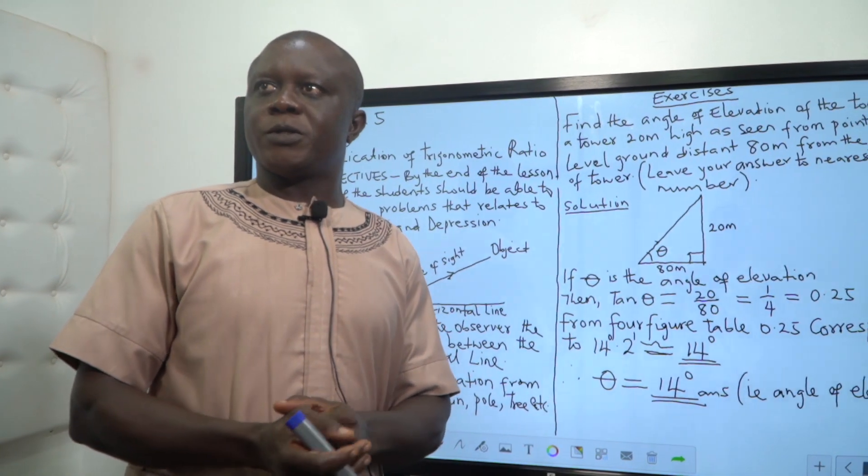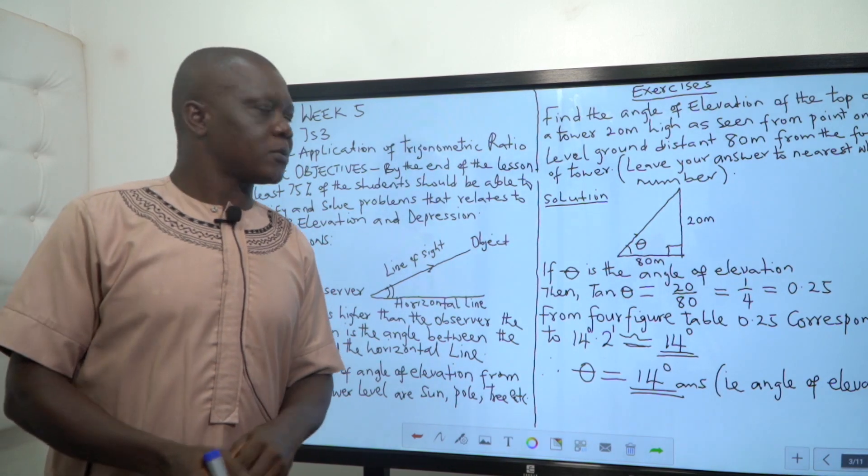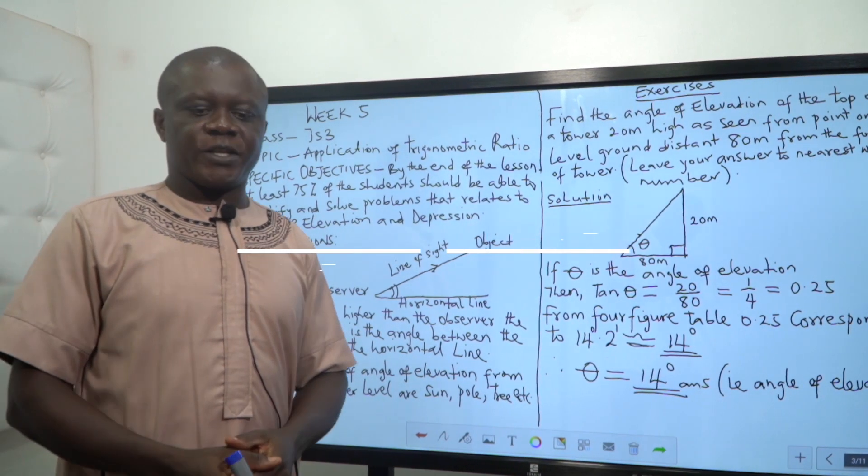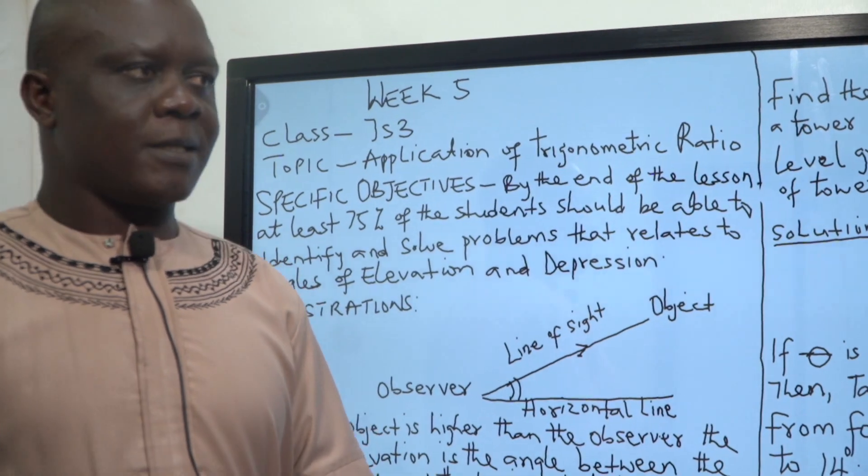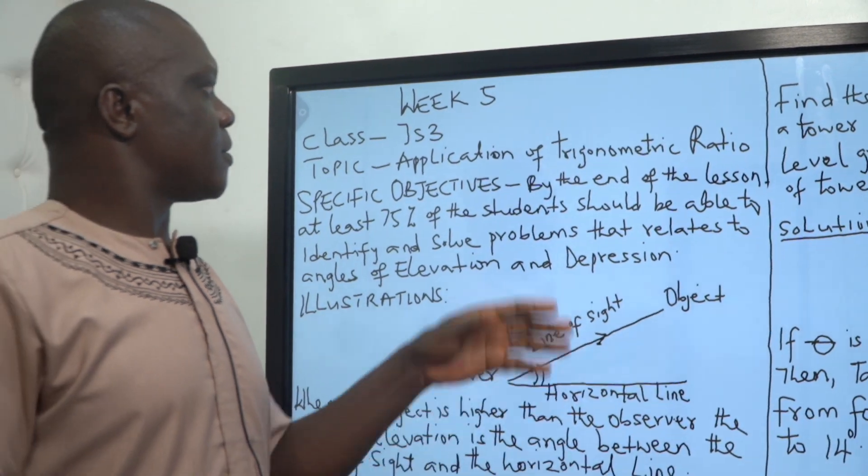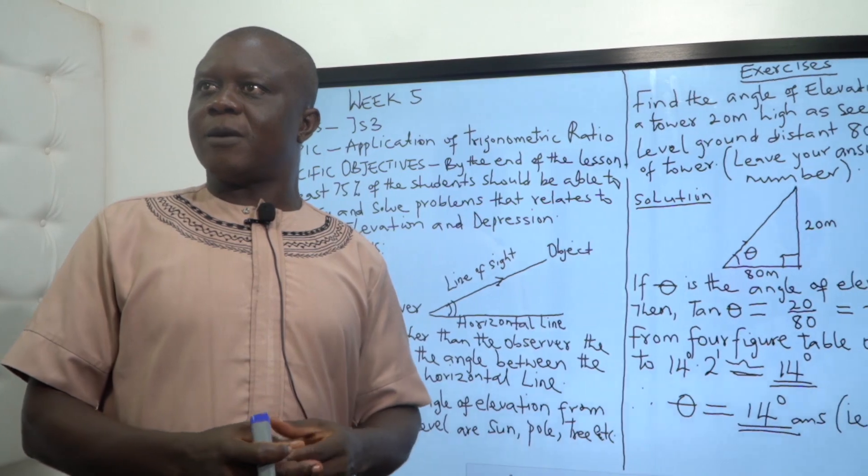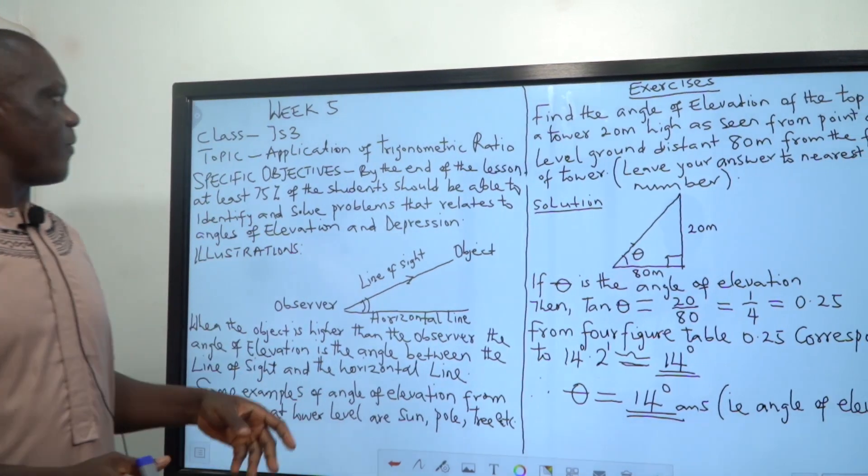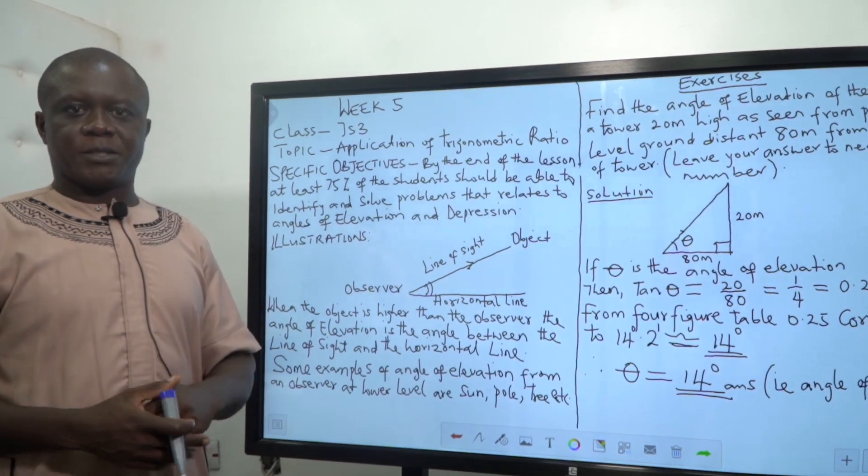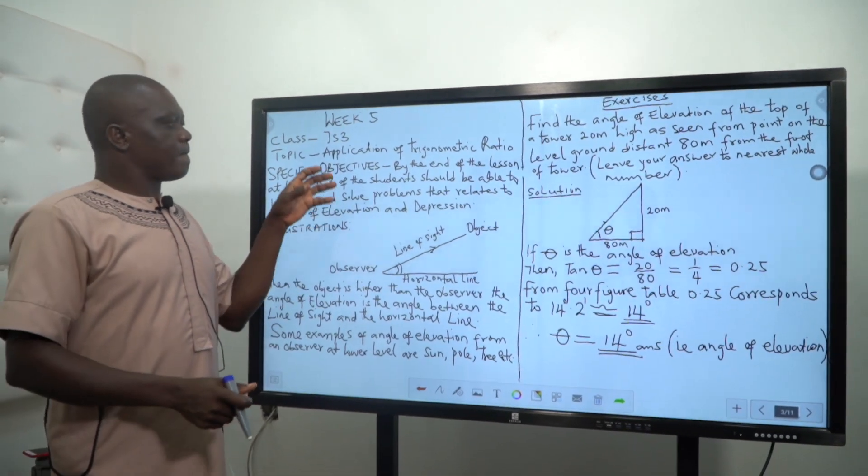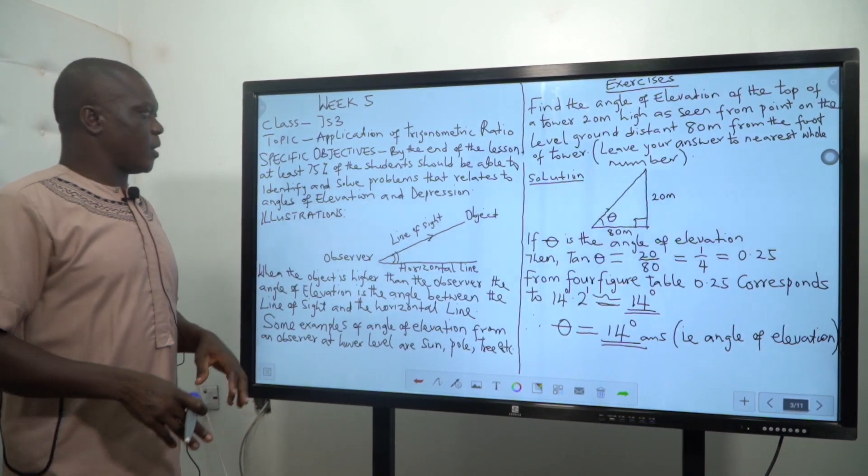Today we are going to enter week 5 and the topic we are going to discuss is application of trigonometry. We know that trigonometry has three main things: sine, cosine, and tangent. If you can recall what we did during second term, we have even talked about trigonometry, but now what we want to do is its application in solving problems like angle of elevation and depression, and that is what we are going to dwell on today.